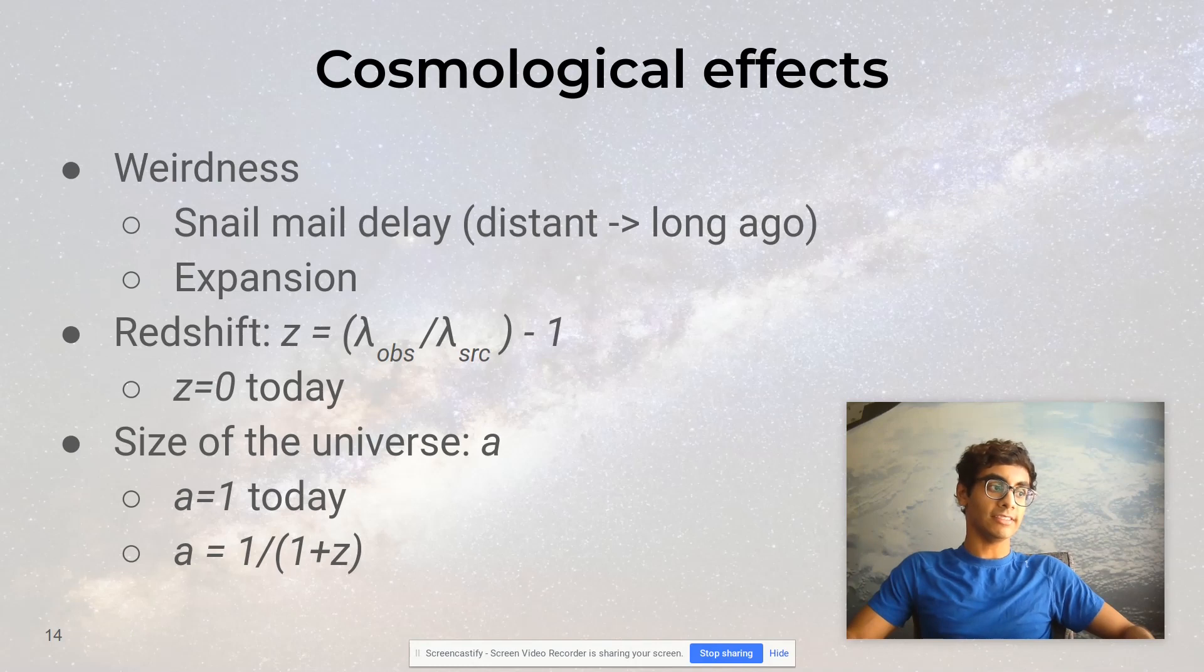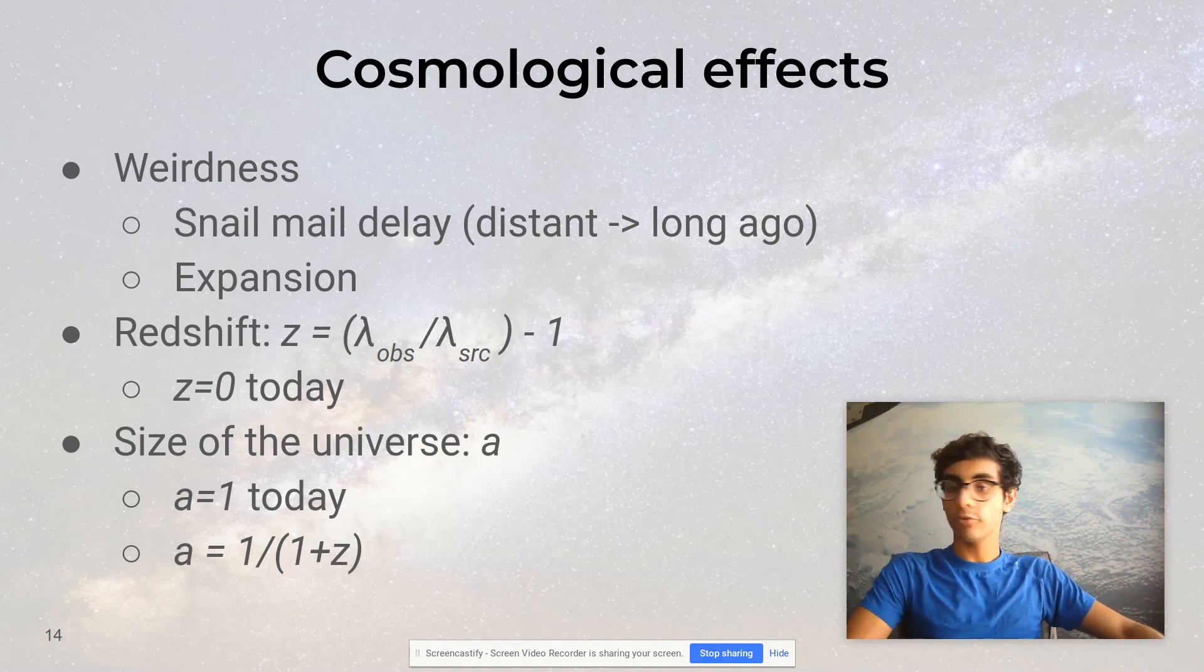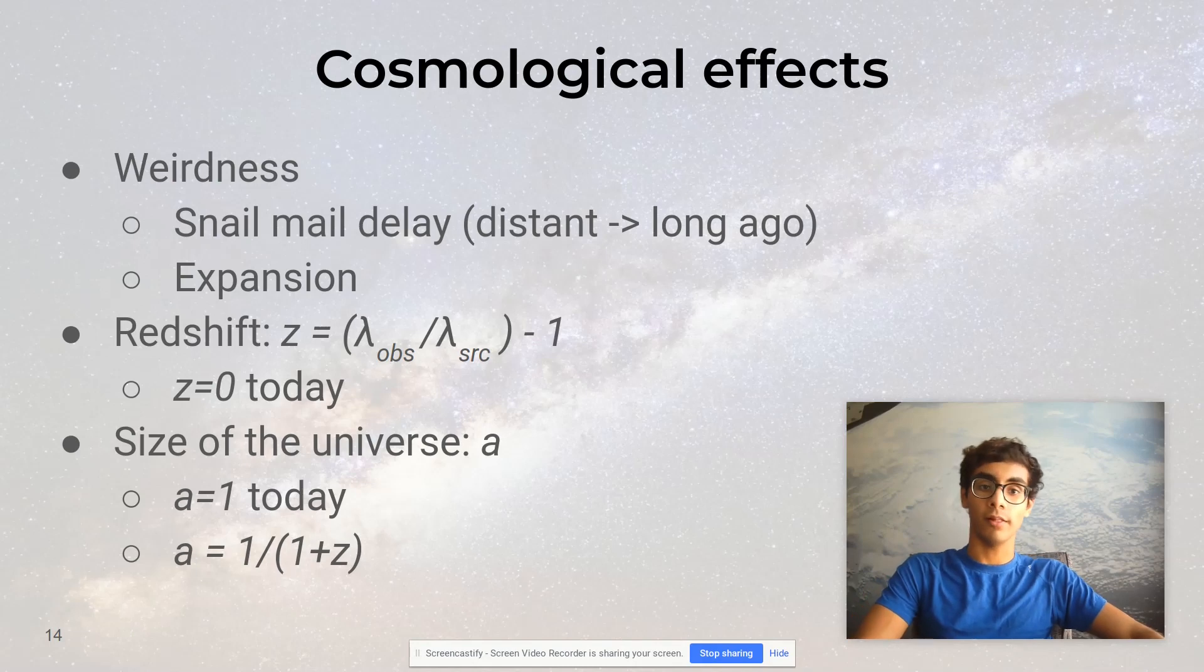The snail mail delay is basically the following idea: if you send a letter via mail to someone across the country, it takes time to get there, maybe a few days or a week. Whatever information you wrote in that letter, when the receiver actually reads it, it'll be old news. Whatever they're learning was true a week ago, but might not still be relevant anymore.